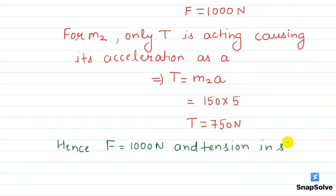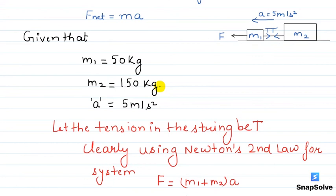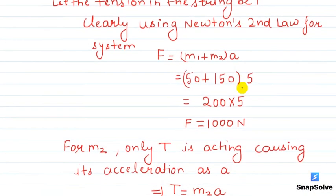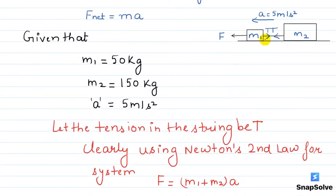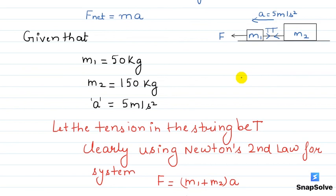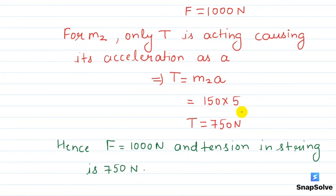Hence F is equal to 1000 newton and tension in string is 750 newton. So the question is summarized. We have given that M1 and M2 two masses are connected, and if M1 is pulled by F force, then acceleration is 5 meter per second square. We used Newton's second law for this system. Capital F is equal to total mass into acceleration, and tension force is equal to M2 into a.